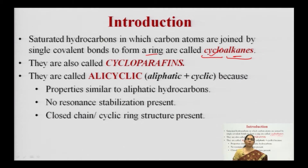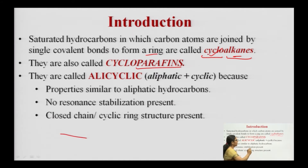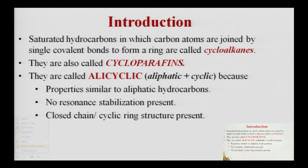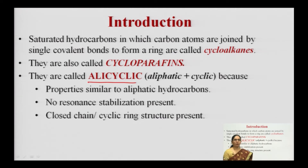They are also called cycloparaffins. When you were studying alkanes, we called them paraffins. Here, alkanes have a cyclic structure, so we call them cycloparaffins — 'paraffin' denotes their alkane nature, and 'cyclo' reflects their cyclic framework. Now, are they exactly similar to alkanes? No. Although they have a ring structure, they are also not resembling aromatic compounds. They are alicyclic — neither purely aliphatic nor aromatic.